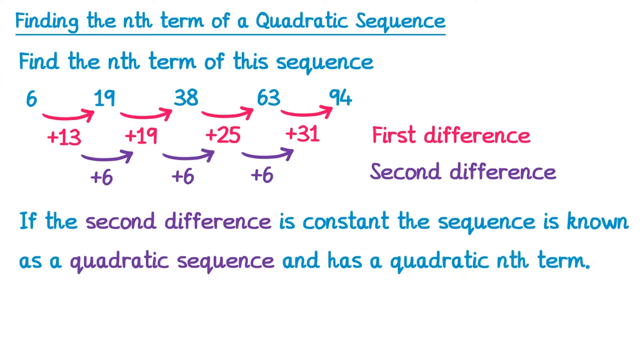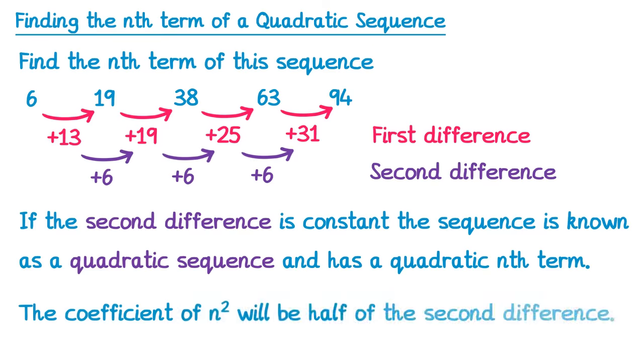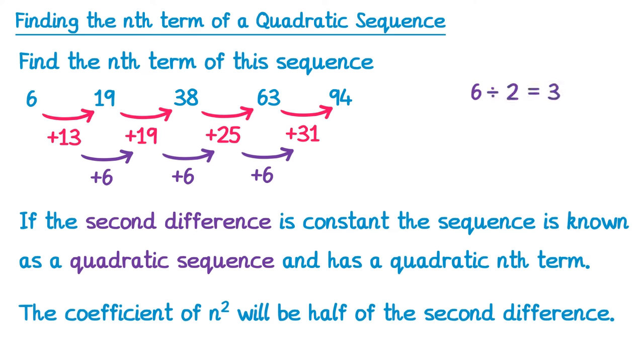So how do we go about finding this nth term? Well, the first thing we need to note is that the coefficient of n squared will be half of the second difference. So if we take that second difference, which was always 6, and then half it, we'll get 3, which is now going to be the coefficient of n squared in our answer. So the answer will begin 3n squared.